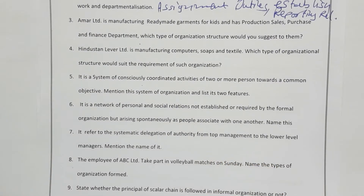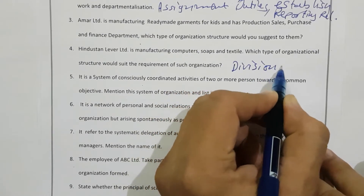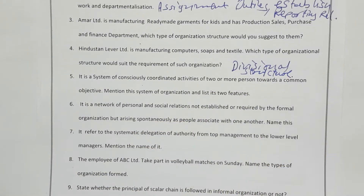Hindustan Lever Limited is manufacturing computers, shops, and textiles. Which type of organizational structure would suit the requirement of such an organization? Here you can see there is a variety of products — shop, textile, computers — so obviously the best type of structure is divisional structure. For different categories of products, a different organizational structure will be adopted.